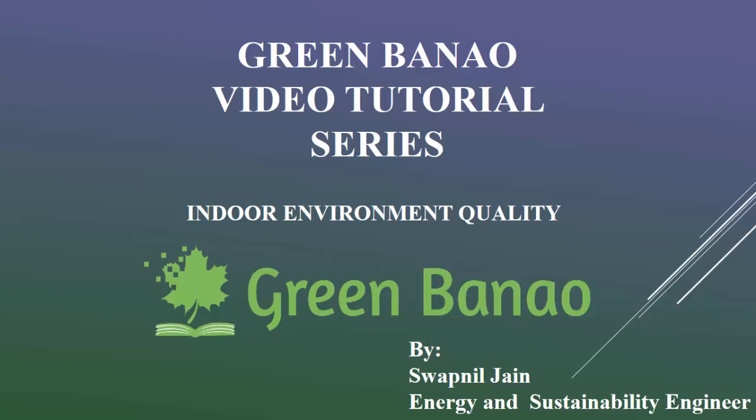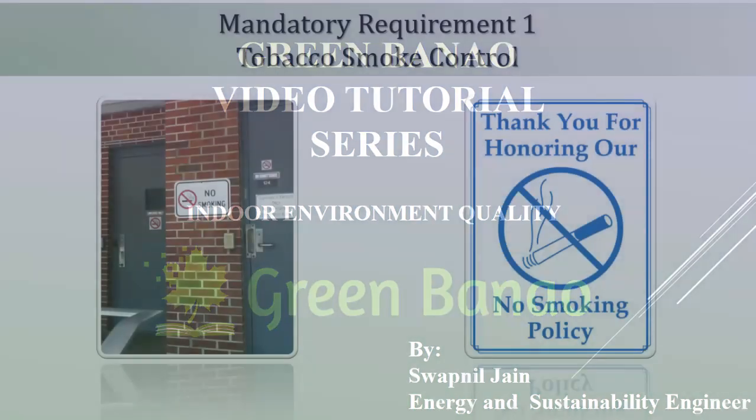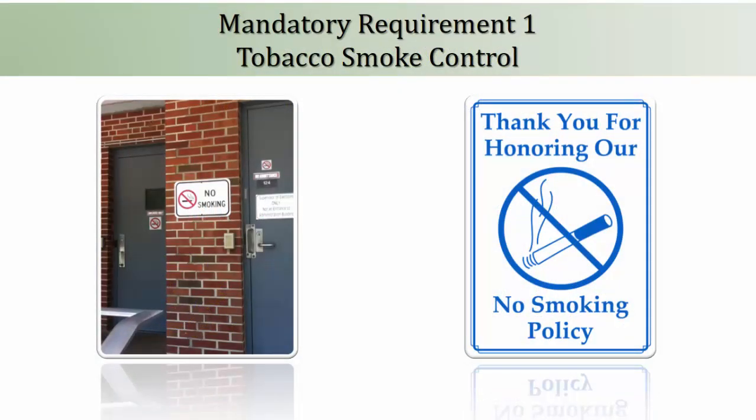Let's start with the first mandatory requirement: smoke control. This mandatory requirement is for the prohibition of smoking in the common areas of the building and campus, to reduce the adverse health impact on occupants due to passive smoking. To meet this requirement, the project team needs to provide no-smoking signages at the common areas within the project site, and also needs to prepare a no-smoking policy for the occupants.